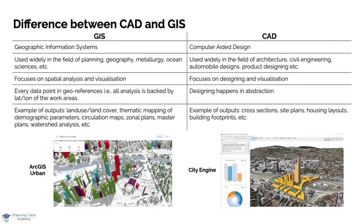Many might wonder why GIS and CAD were developed differently if they serve similar features. The key differences are: GIS stands for Geographic Information Systems and is used in planning, geography, metallurgy, ocean sciences, etc., while CAD stands for Computer-Aided Design and is used in architecture, civil engineering, automobile design, and product design. GIS focuses on spatial analysis and visualization, while CAD focuses on designing and visualization. Every data point in GIS is geo-referenced — backed by latitude and longitude — while in CAD all designing happens in complete abstraction.